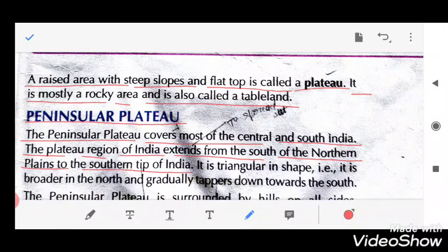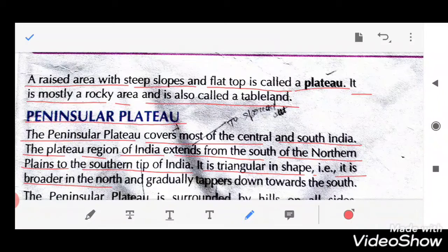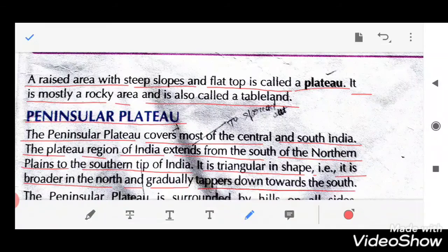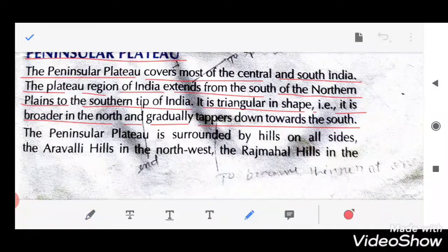It is triangular in shape — tikoona hai. It is broader in the north — north mein iski chauddai zyada hai — and gradually tapers down towards the south — south ki taraf ye patla hota jata hai.